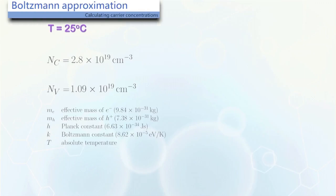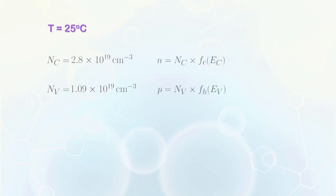With Nc and Nv known, the expressions for the number of carriers are simplified to what is given here. But it is still not easy enough to use, and we will do more simplifications to the Fermi-Dirac function.